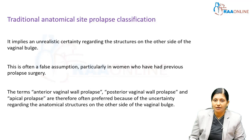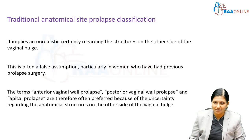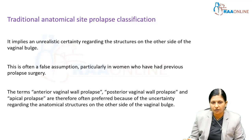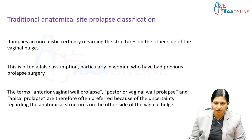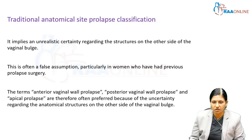This anatomical site prolapse classification told us the grade of cystocele, rectocele, and urethrocele, but there was an unrealistic certainty regarding the structure on the other side of the vaginal bulge — often a false assumption, particularly in women who have had previous prolapse surgeries. The terms anterior vaginal wall prolapse, posterior vaginal wall prolapse, and apical prolapse are therefore often preferred because of the uncertainty regarding the anatomical structures on the other side of the vaginal wall.